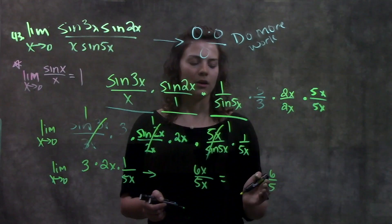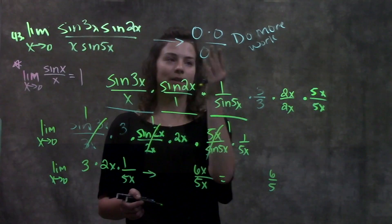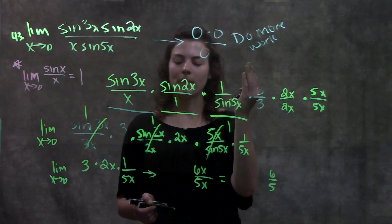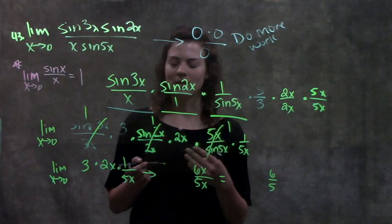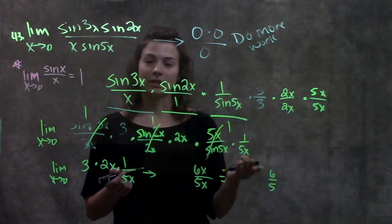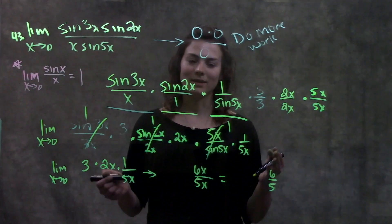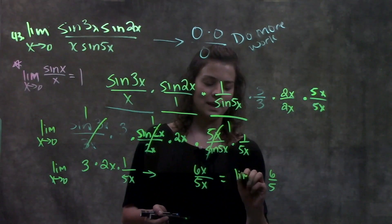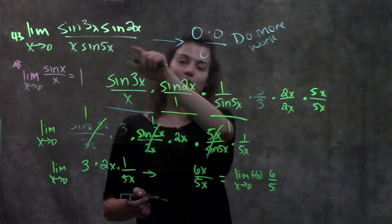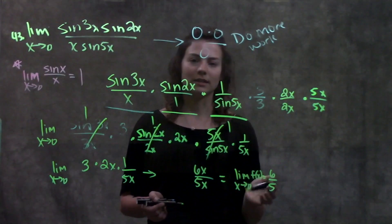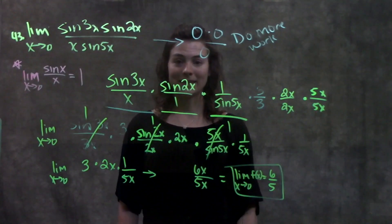Remember in our first step when we tried direct substitution we got zero over zero — an indeterminate form. But when we rewrote and simplified the function, the answer ended up being just six over five, which is a valid answer, which means we are done. This is the answer to this problem. The limit as x approaches zero of that really huge function we started with is just six over five. And that's the end of this problem.